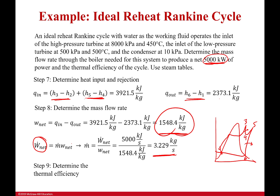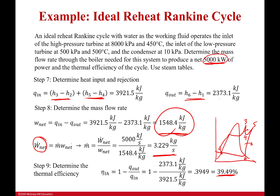Finally, the thermal efficiency is 1 minus Q_out over Q_in, which comes out to 39.49%. You can also compute it as net work divided by Q_in and you'll get the exact same number. Choose whichever formula works best for you. That completes the problem — thank you all for listening, and I'll see you next time.